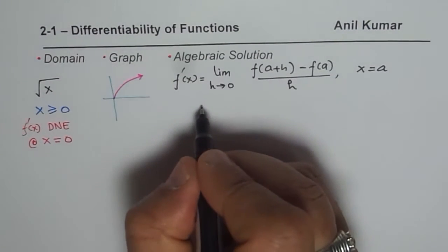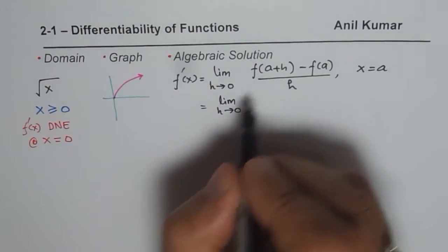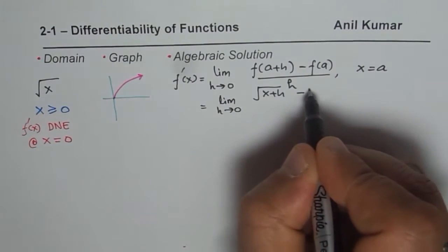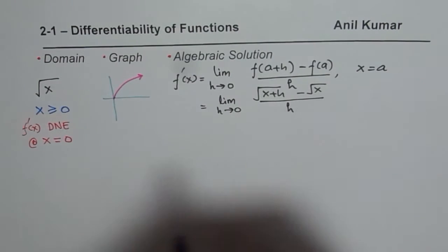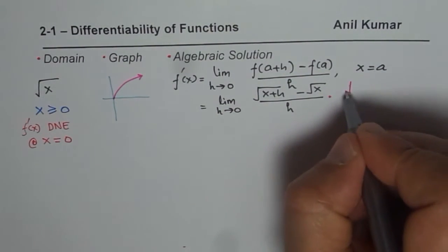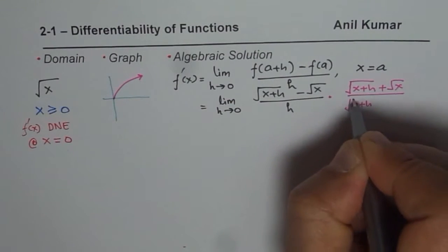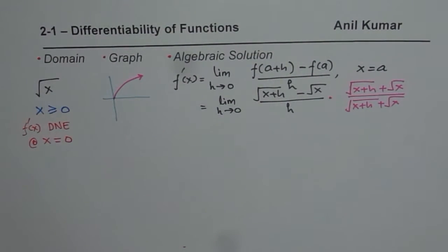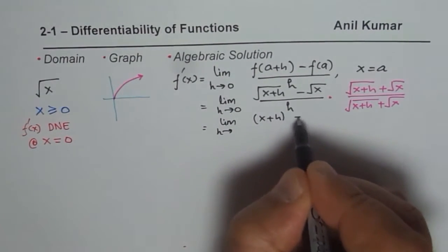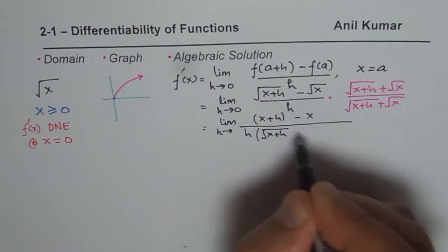Let me develop the whole idea further. Using the basic definition for square root x, we write the limit of [√(x+h) − √x] over h. To solve this, we multiply and divide by the conjugate — that is, [√(x+h) + √x] over [√(x+h) + √x]. This is called rationalization. Once you rationalize, you get the difference of squares on top: (x+h) − x, and the denominator is h times [√(x+h) + √x].